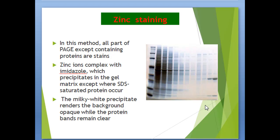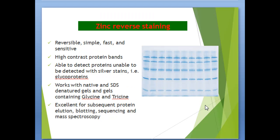Another method is zinc staining. In this method, all parts of the PAGE gel except those containing proteins are complexed with zinc ions and imidazole, which precipitates in the gel matrix except where SDS-saturated protein occurs. The milky white precipitate renders the background opaque while the protein bands remain clear. Zinc reverse staining is reversible, simple, fast, and sensitive, with high-contrast protein bands. It is able to detect proteins that cannot be detected with silver staining, such as glycoproteins. It works with native and SDS-denatured gels and gels containing glycine and tricine, and is excellent for subsequent protein elution, blotting, sequencing, and mass spectroscopy.